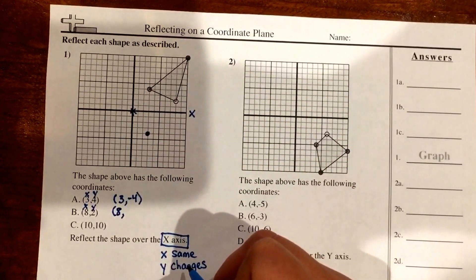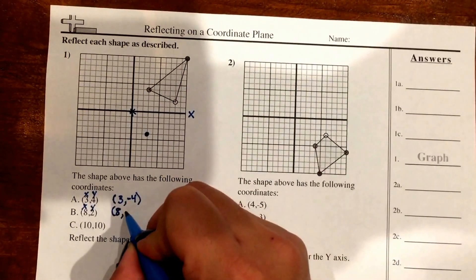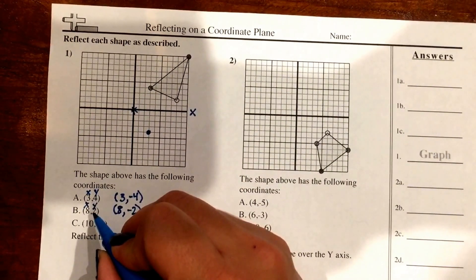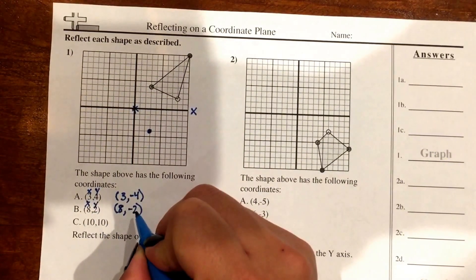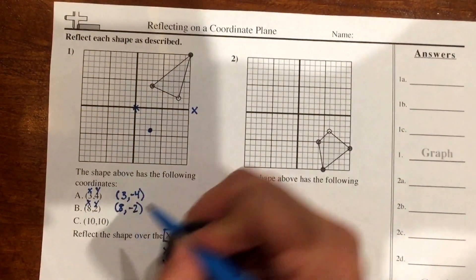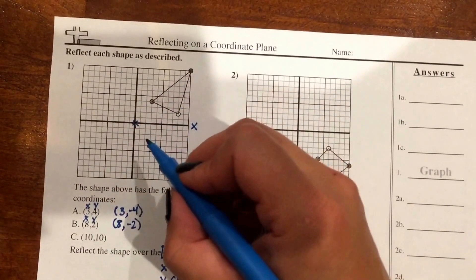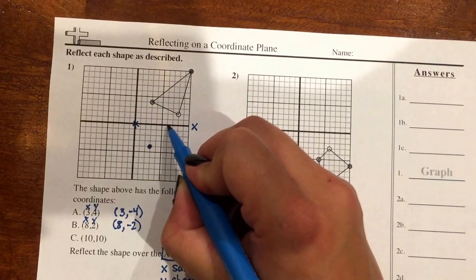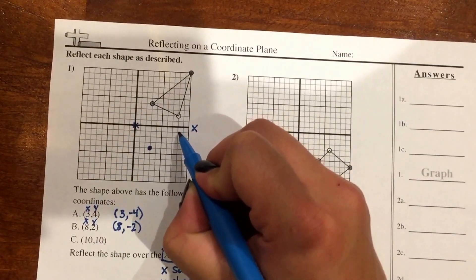And my y-coordinate is going to change to a negative 2, because the original point was a positive 2 y-coordinate. So it changes to the opposite of negative 2. So I'm going to go ahead and graph that point also. So 1, 2, 3, 4, 5, 6, 7, 8, down 2.